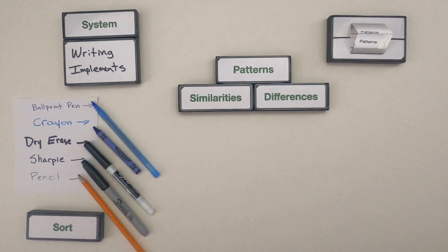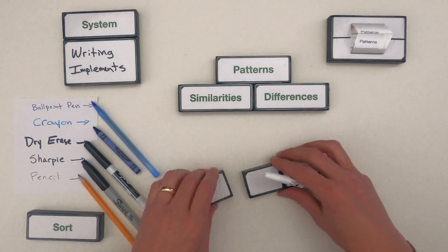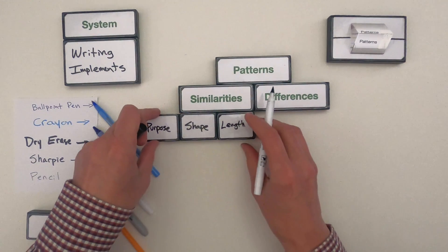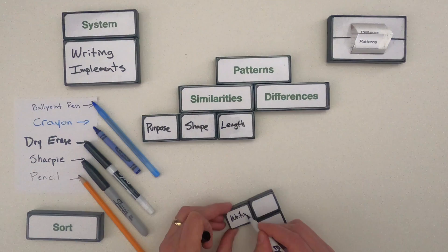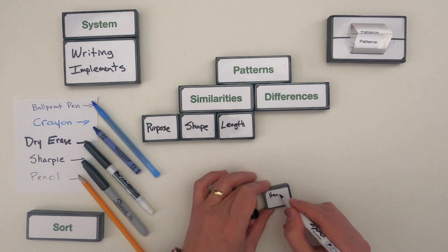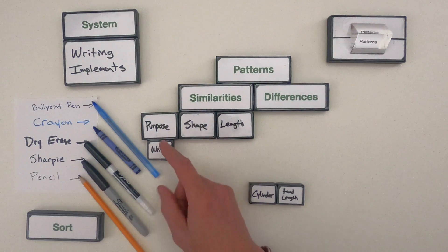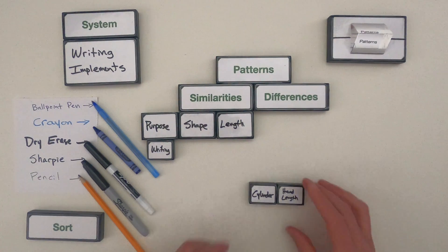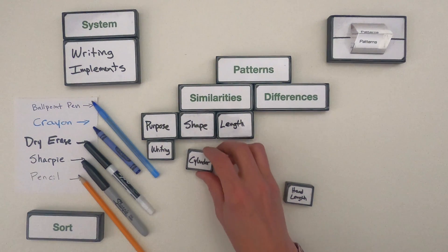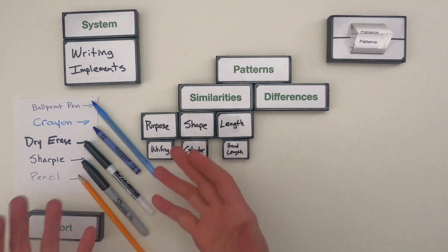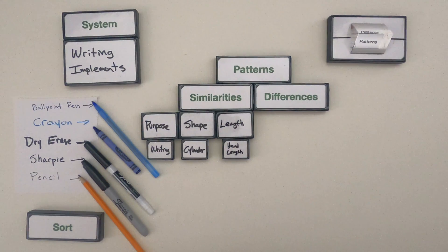All right, now that you're back, what I'd like to do is start thinking about what are the similarities between all of these writing implements? Let me write those down. Okay, so the similarities I see is that they're all used for writing or communicating. The shape, in general, they all have a cylindrical shape with a point at the end. And then the length, they're all about the length of your hand, which makes sense because you're going to use your hand.